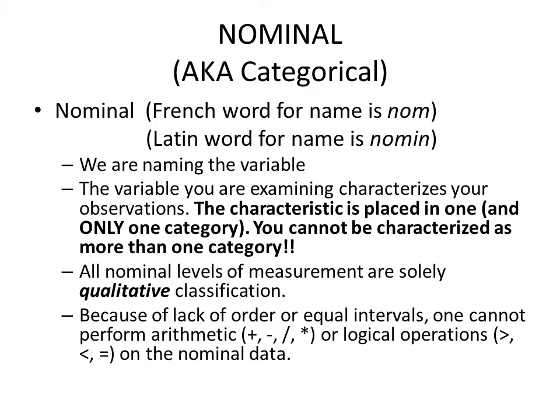Because nominal variables are qualitative and have no order or equal intervals, we cannot perform arithmetic — addition, subtraction, division, or multiplication — nor can we perform logical operations such as saying something is greater than, less than, or equal to another. On an exam, use the word 'nominal' rather than 'categorical.'